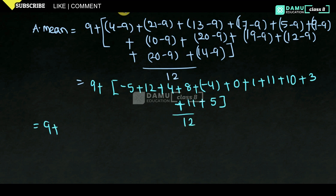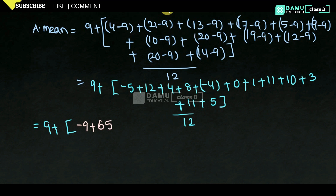So we get 9 plus this value. The negatives are minus 5 and minus 4, giving minus 9. The positives: 12 plus 4 plus 8 plus 1 plus 11 plus 10 plus 3 plus 11 plus 5 gives 65. So: 9 plus 65 minus 9, giving 56 over 12. That is 9 plus 56 by 12.